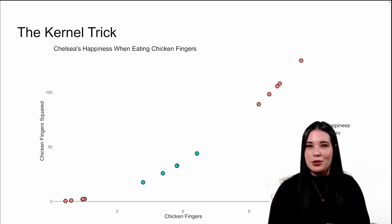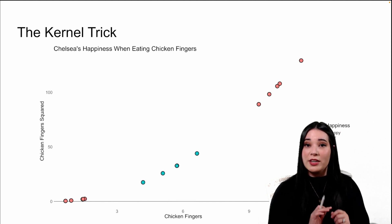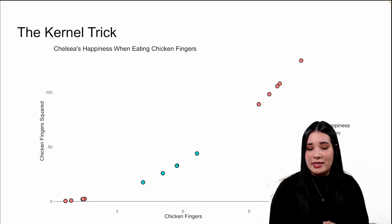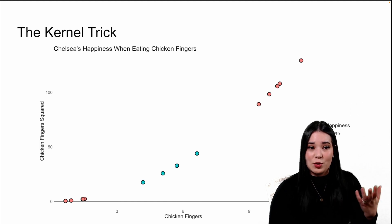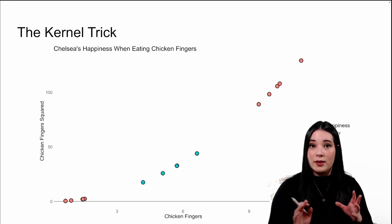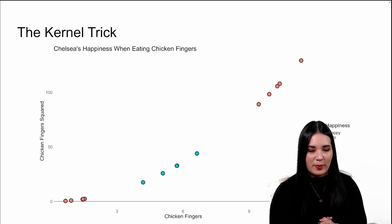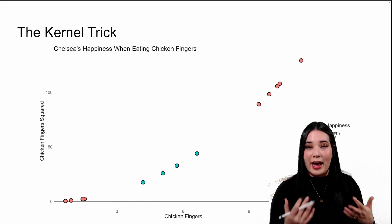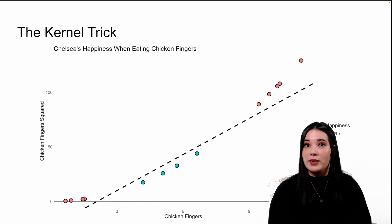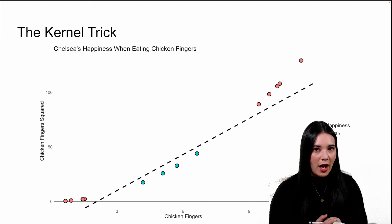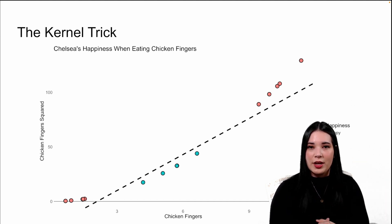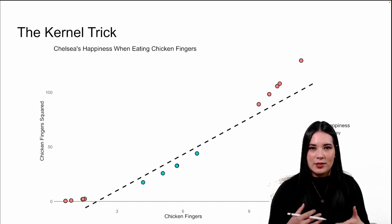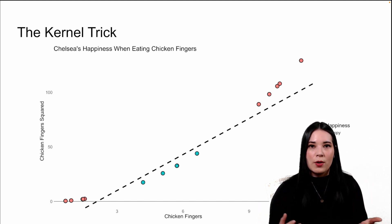But what if I introduced a new variable: chicken fingers squared? All this is is taking my original variable and squaring it and making that my second predictor. Now in this new two-dimensional space, I can use a straight hyperplane in order to classify happy from unhappy. So when we projected our data to a higher dimension, we were able to use a flat hyperplane in order to classify our two groups of data points, even though that wasn't possible with our original data.